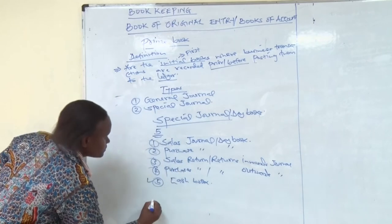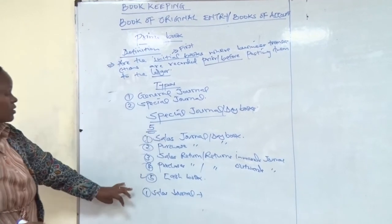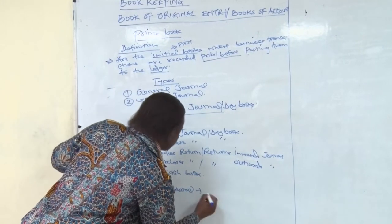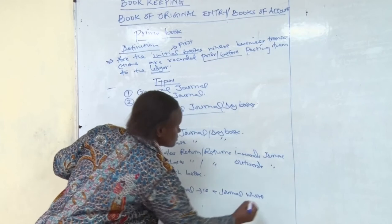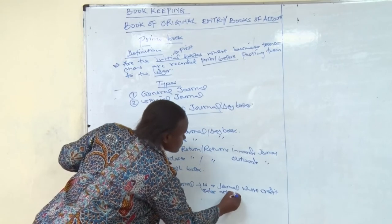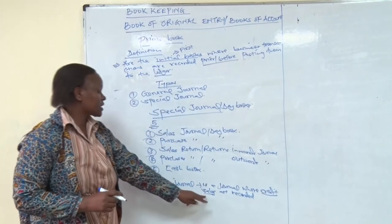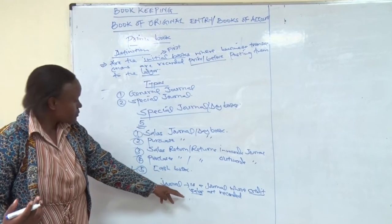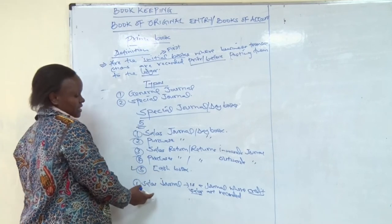The sales journal is a journal, or a day book, where sales which were made on credit are recorded. So in the sales journal we record only credit sales. If you sell your goods and receive payment immediately, you record it in the cash book. Those which you sell on credit, you record in the sales journal.